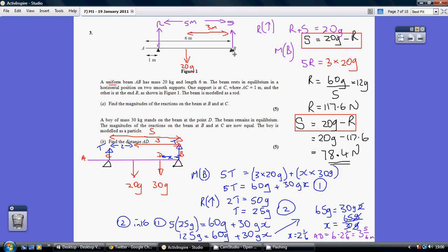So now choosing to take moments about B, I've got in the anti-clockwise direction, I've got 5R. And in my clockwise direction, excuse me, and then in my anti-clockwise direction, I've got 3 times 20G. So 5R equals 3 times 20G. Again, divided by 5 to make R the subject, I get R being 12G. So R is 117.6 Newtons.